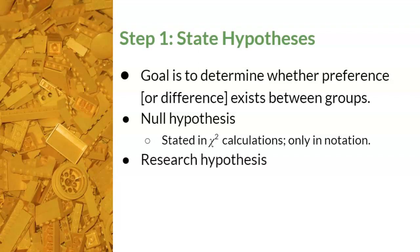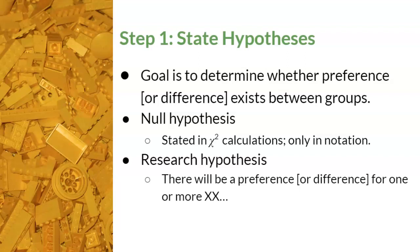For the research hypothesis, we are predicting that there will be a preference or difference for one or more of the groups that we're studying. We will only report the research hypothesis in a sentence — there will be no statistical notation for it. The star here is to remind students that the wording and statistical notation are significantly modified for a hypothesis test with chi-square for goodness of fit.